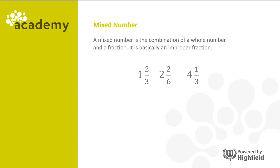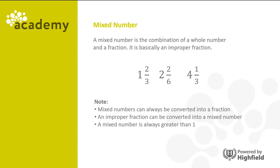A mixed number is the combination of a whole number and a fraction, but it's basically an improper fraction written in a different way. Mixed numbers can always be converted into a fraction, and an improper fraction can be converted into a mixed number. A mixed number is always greater than one.